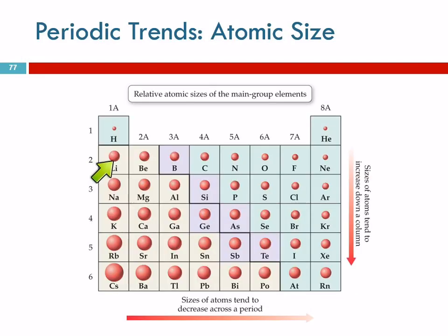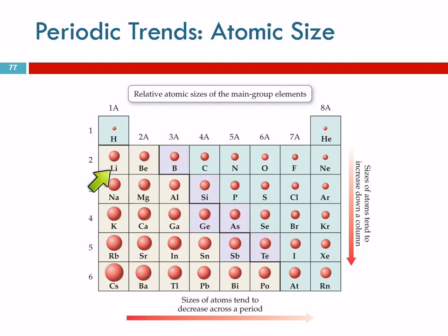As we go from lithium to beryllium to boron over to neon, neon is much smaller. Neon has 10 protons in its nucleus — a plus 10 charge. Lithium has a plus 3 charge. Higher charge means stronger attraction between opposite charges, so the electrons get pulled in tighter. As we add electrons going across, we're adding them all into the same shell, so they're not really any farther away, but the increasing nuclear charge pulls them in tighter. So as we go across, the atoms get smaller.